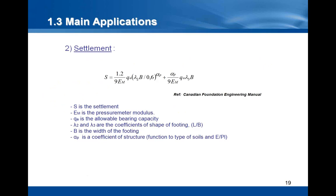The settlement prediction can be done with this formula. We can see that the settlement is related, among others, to E, the pressure meter modulus, and alpha P, which is a function of the type of soil and the ratio E over PL.